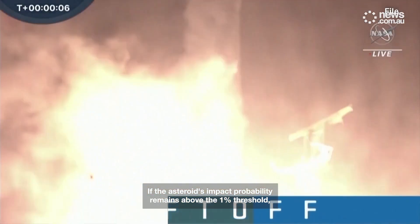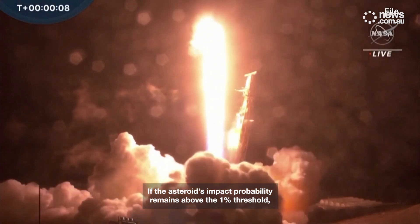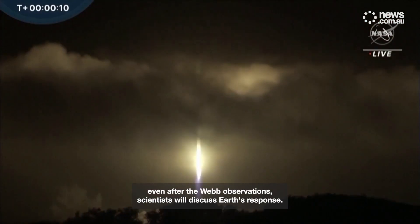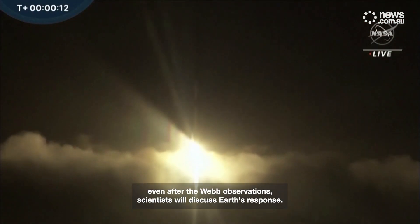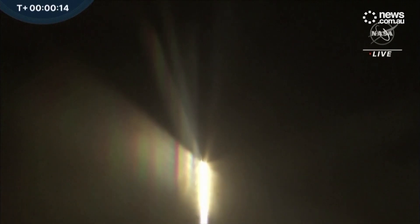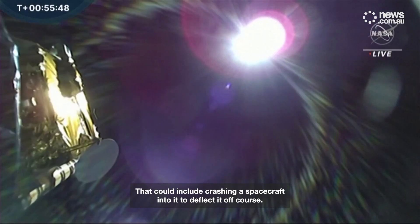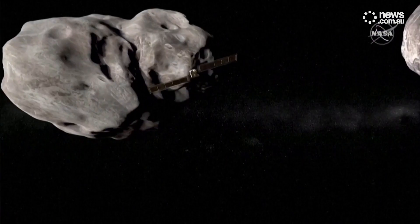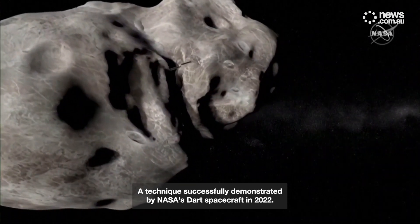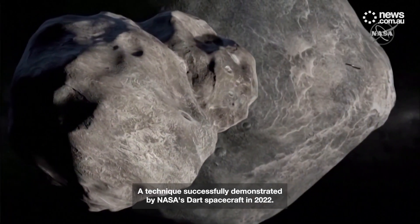If the asteroid's impact probability remains above the 1% threshold, even after the Webb observations, scientists will discuss Earth's response. That could include crashing a spacecraft into it to deflect it off course, a technique successfully demonstrated by NASA's DART spacecraft in 2022.